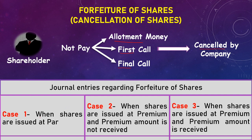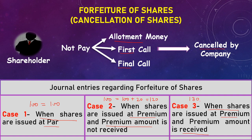When the company does forfeiture entries, there are three cases. First, when the shares are issued at par — if the face value is rupees 100 and the issued price is also rupees 100. Second, when shares are issued at premium and the premium amount is not received. Third, when shares are issued at premium and the premium amount is received.